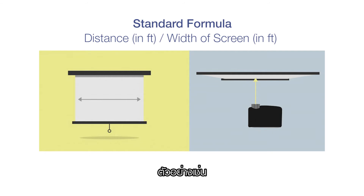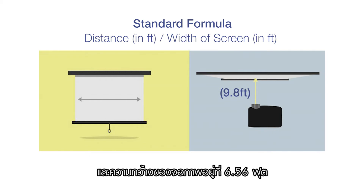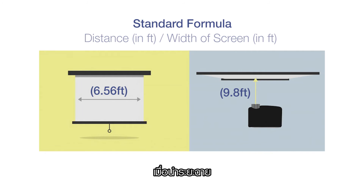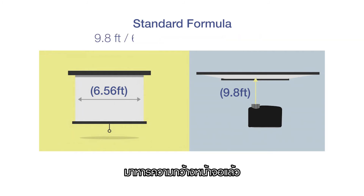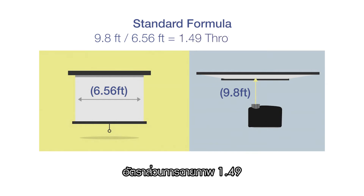Let's take an example: if the distance from the projector to the screen is about 9.8 feet and the width of the screen is about 6.56 feet, the formula is to take the distance divided by the width of the screen. Based on this calculation, you will achieve a throw ratio of 1.49.